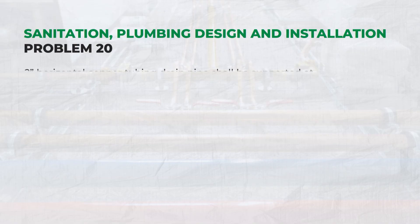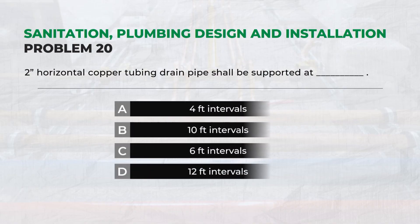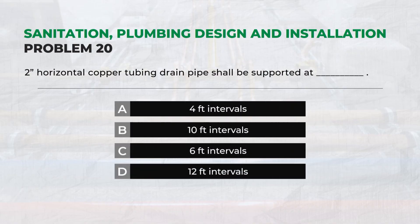2-inch horizontal copper tubing drain pipe shall be supported at: C. 6 feet intervals.